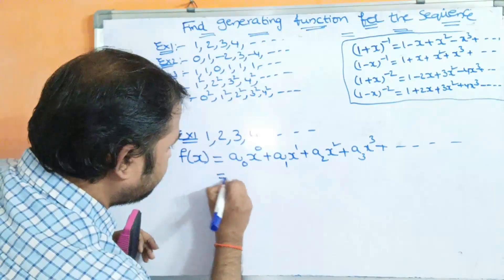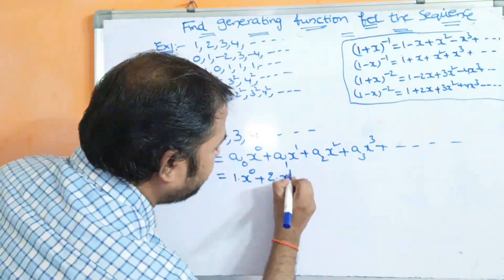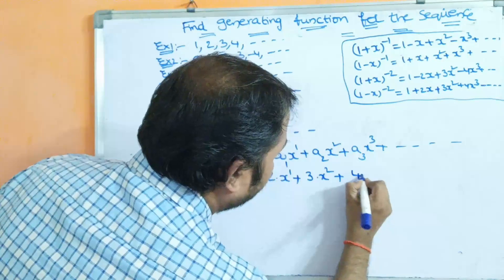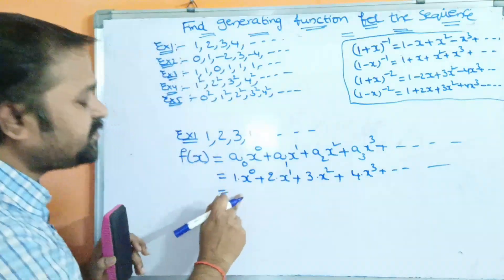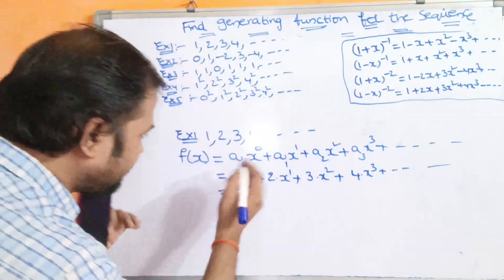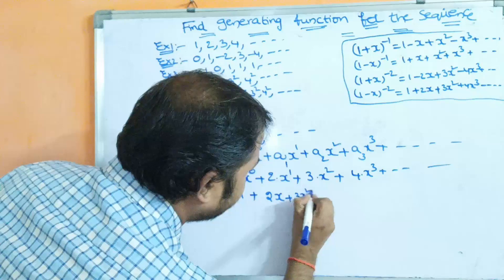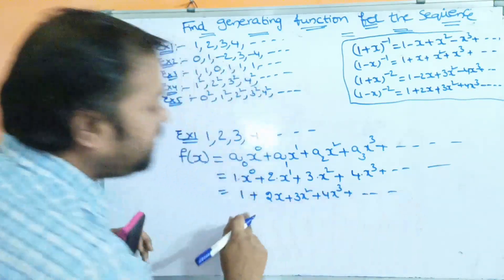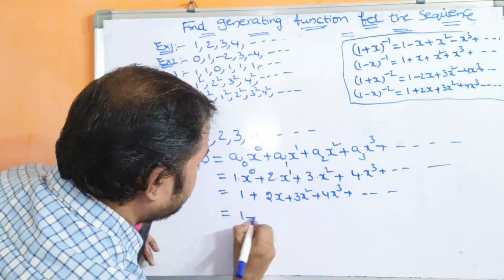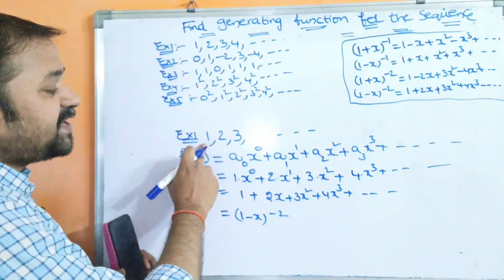Here a₀ = 1, so we get 1·x⁰ + 2·x¹ + 3·x² + 4·x³ + ... Since x⁰ = 1, this simplifies to 1 + 2x + 3x² + 4x³ and so on. This matches the formula for (1-x)^(-2). So (1-x)^(-2) is the generating function for this sequence.